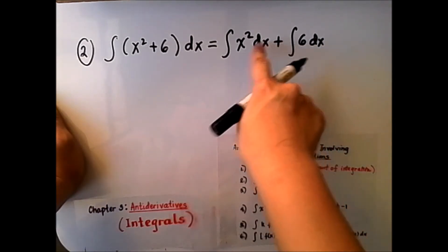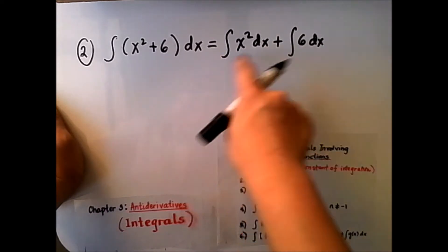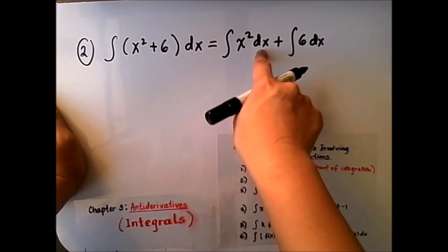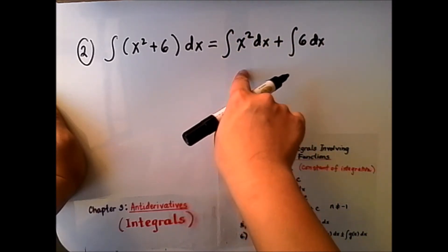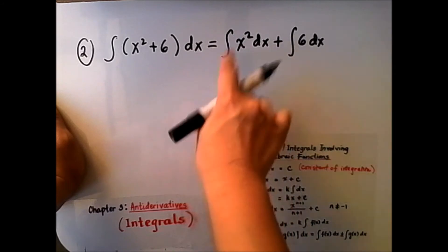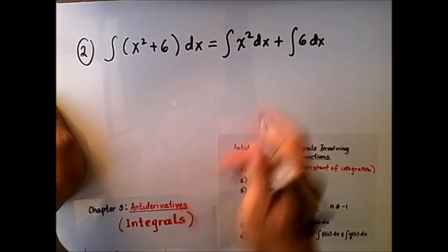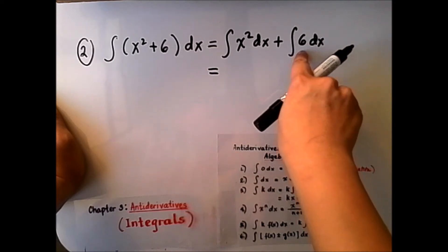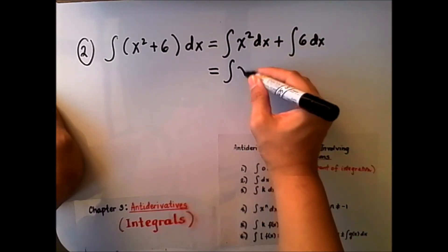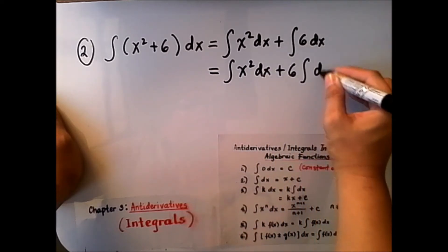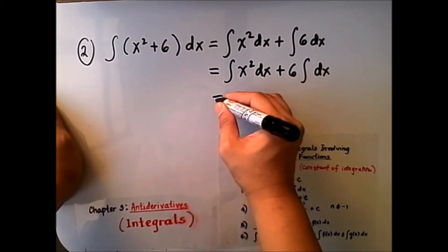Do not forget to put the dx — the integral symbol and dx are always partners. Do not forget to put dx if there's an integral sign, and vice versa. According to rule number 3, we can factor out the constant 6. So this becomes the integral of x squared dx, plus 6 times the integral of dx.